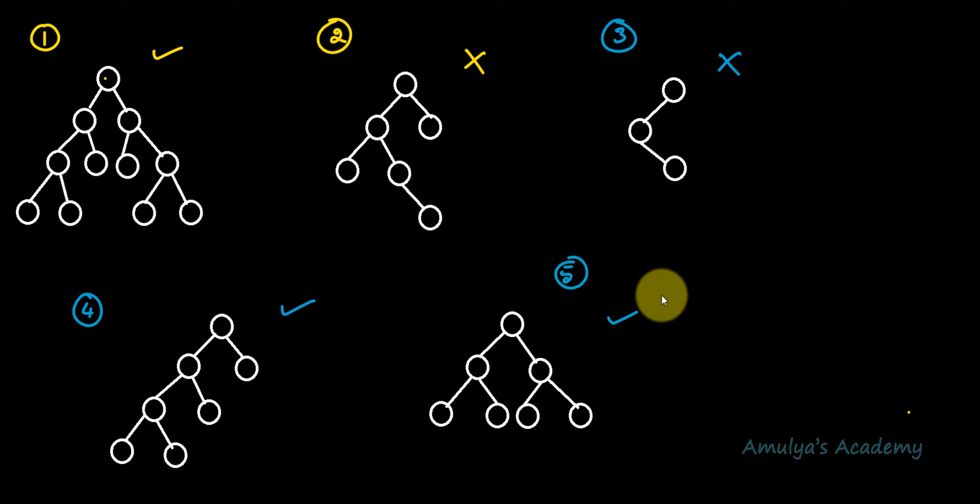To summarize: a full binary tree is a type of binary tree, so first the tree must be a binary tree. Then check the number of children of each node — if every node has 0 or 2 children, it is a full binary tree. If any node has exactly 1 child, it is not a full binary tree.